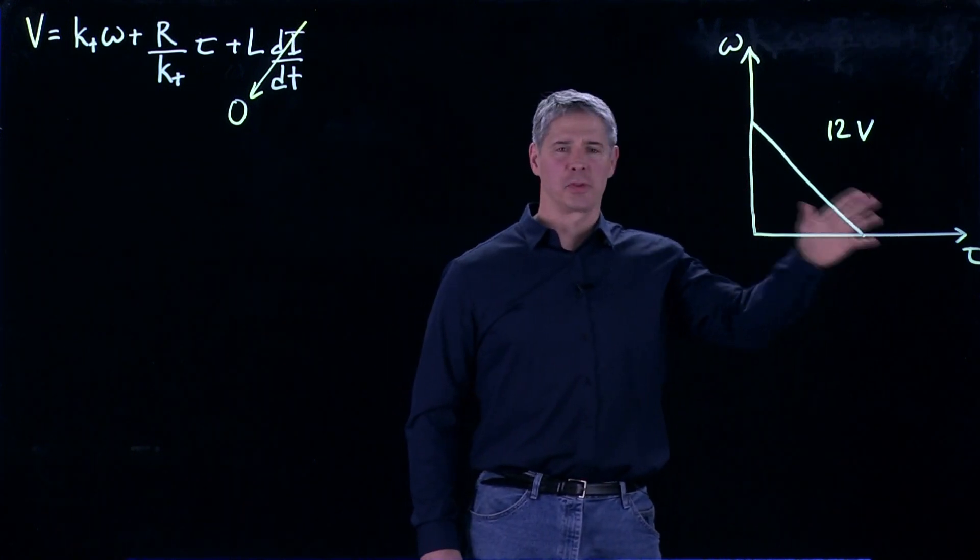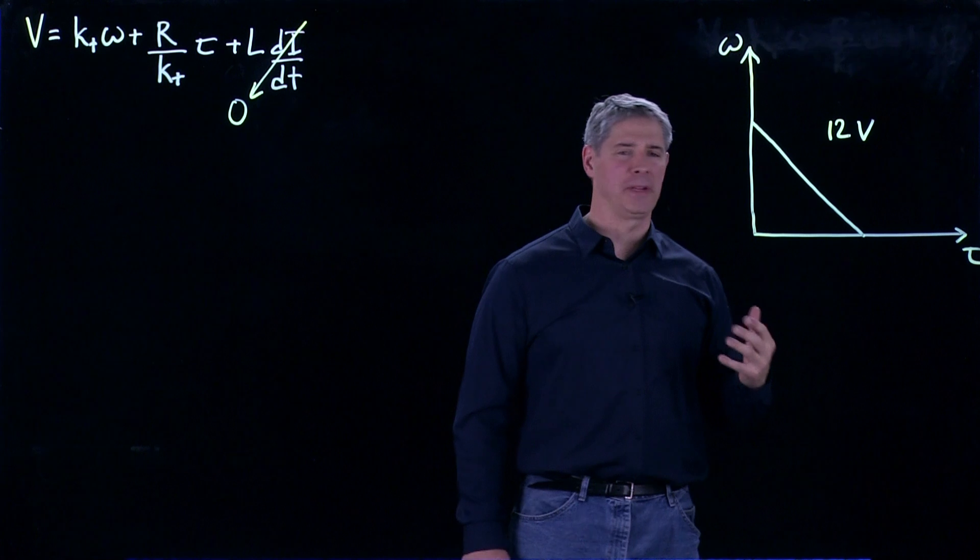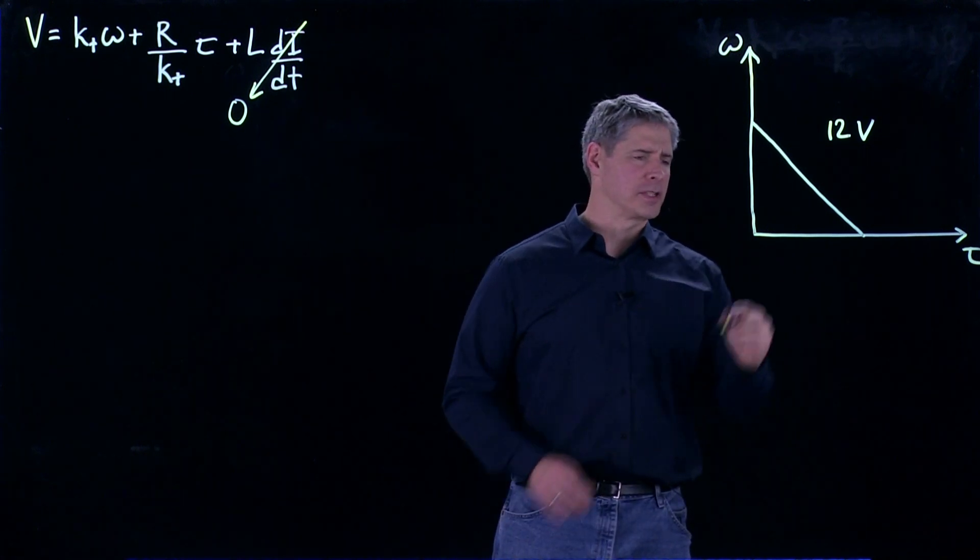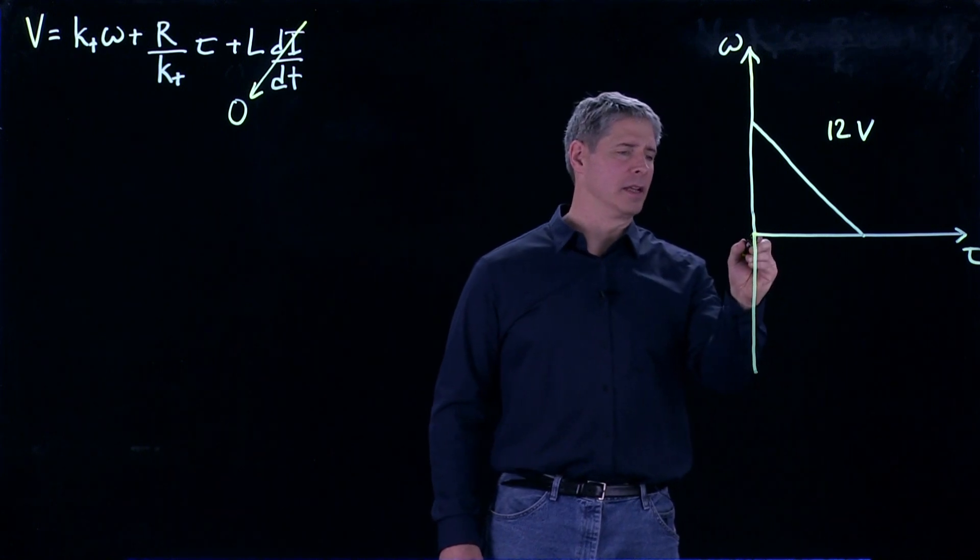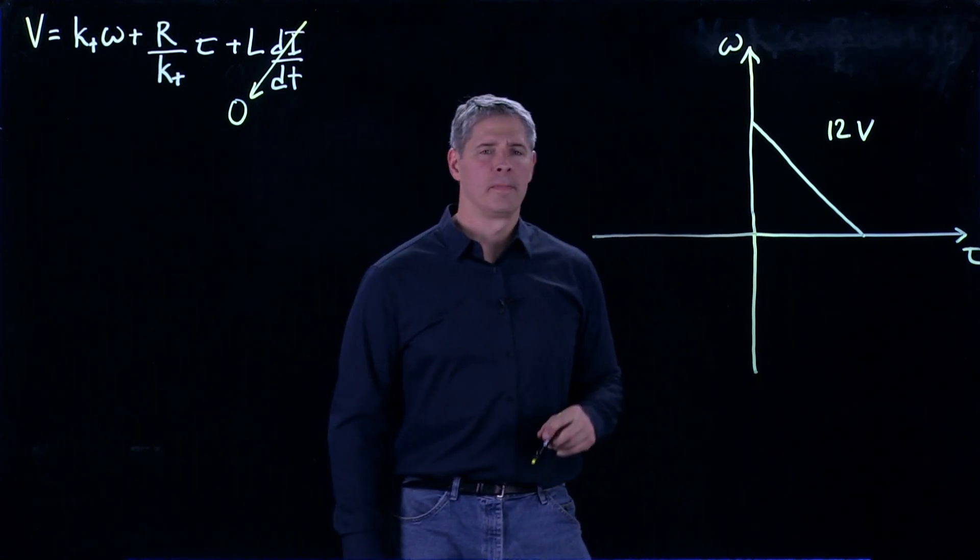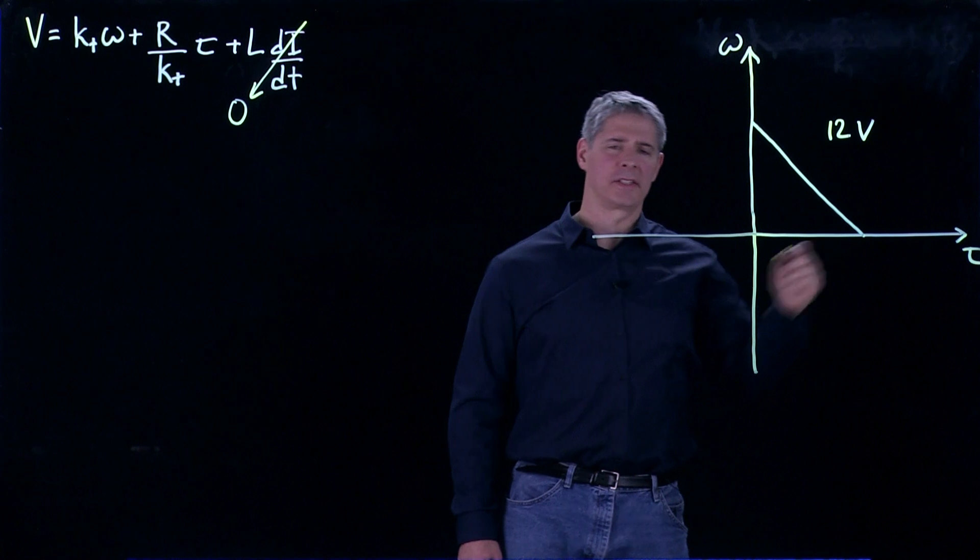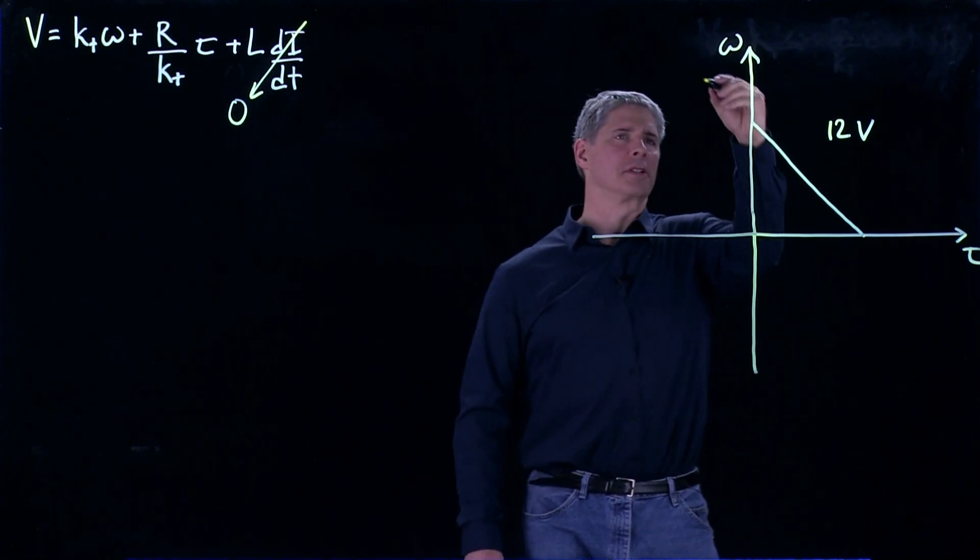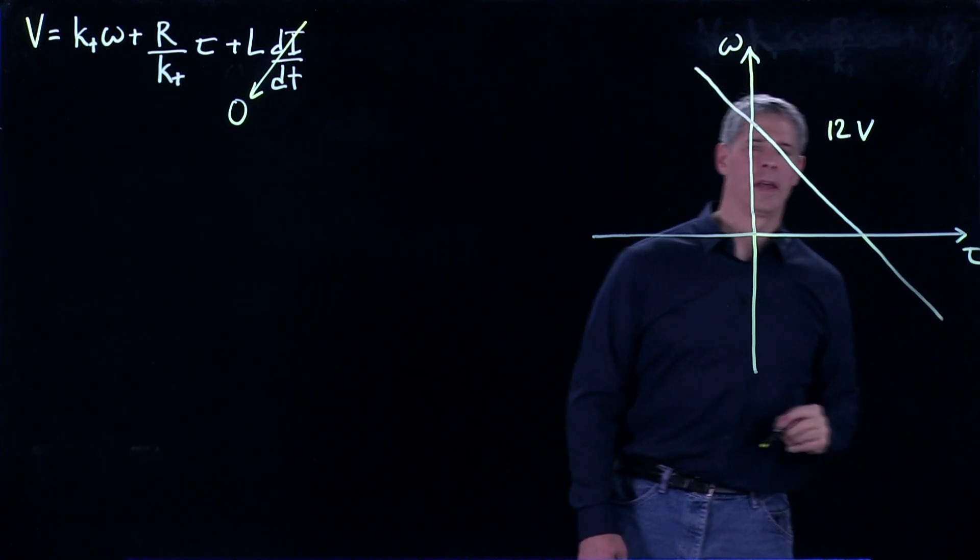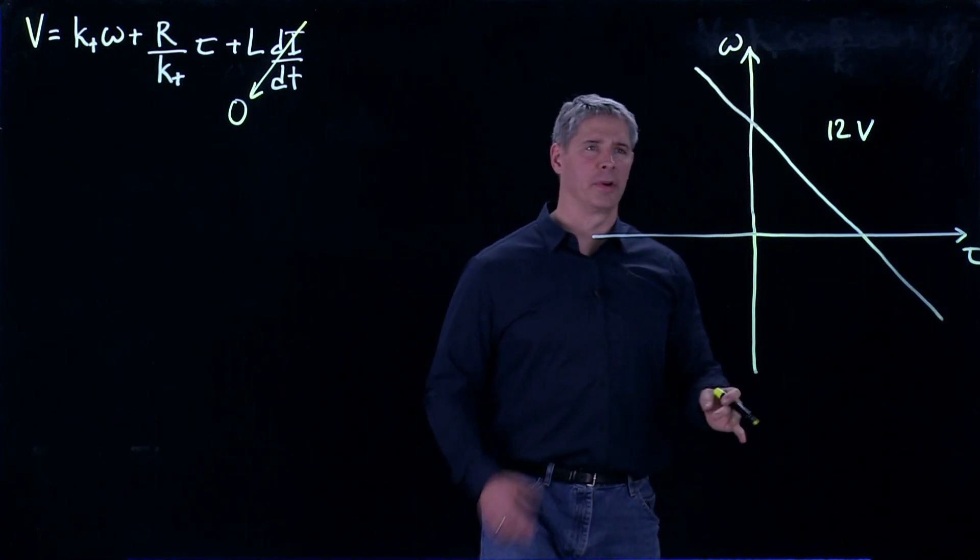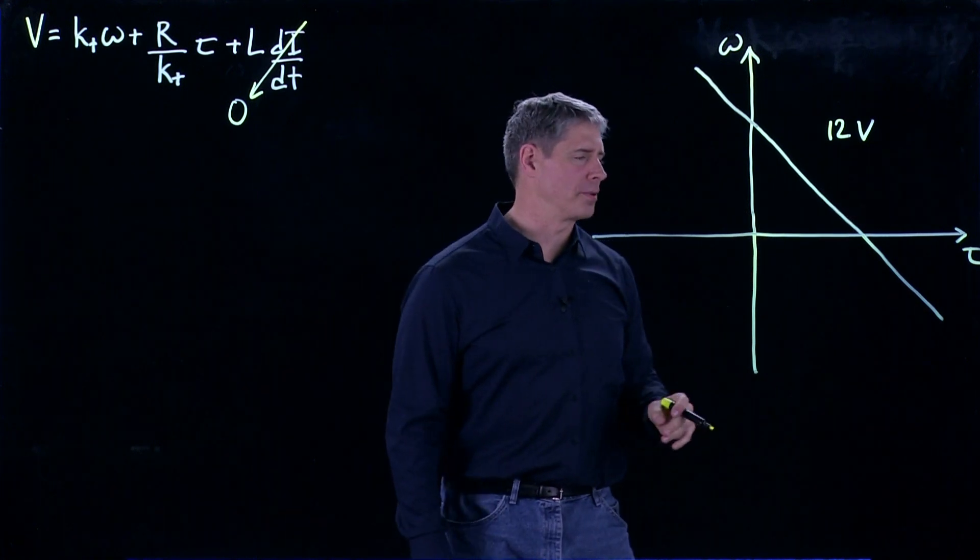This is actually just one quadrant of the speed-torque plane. There's no reason we can't talk about negative speeds and negative torques. And this line here extends beyond this quadrant, so we can just extend it out like this.